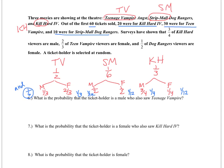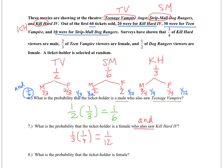Question six: what is the probability that the ticket holder is a male who saw Teen Vampire? We do one-half times one-third, which gives one-sixth. Question seven: what is the probability that the ticket holder is a female who also saw Killhard? 'Also saw' means AND. Killhard is one-third times female is one-fourth, so a person who saw Killhard and is female has a probability of one-twelfth.